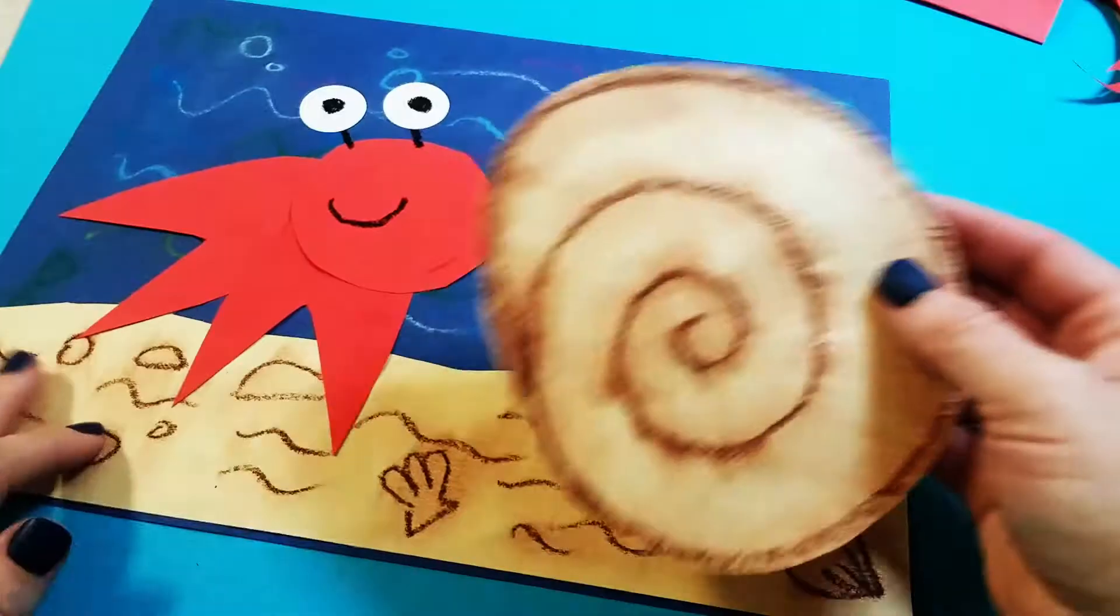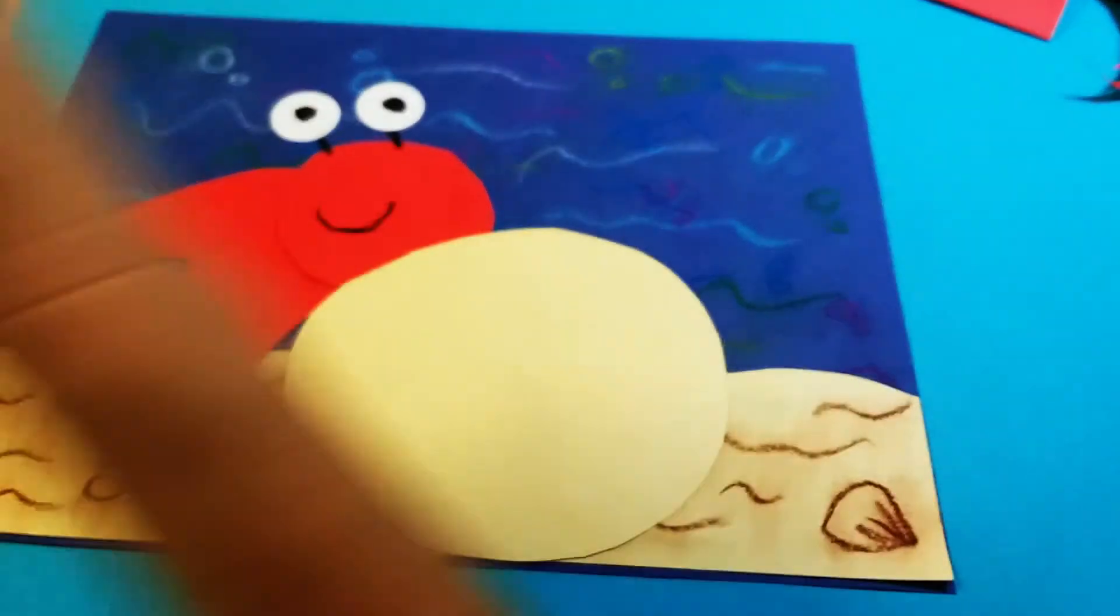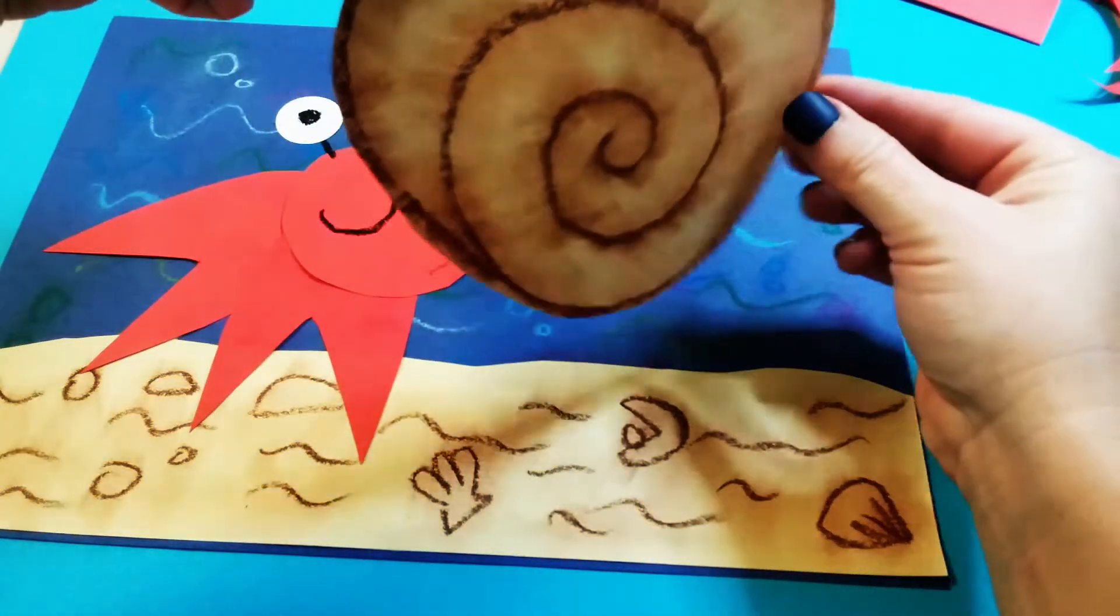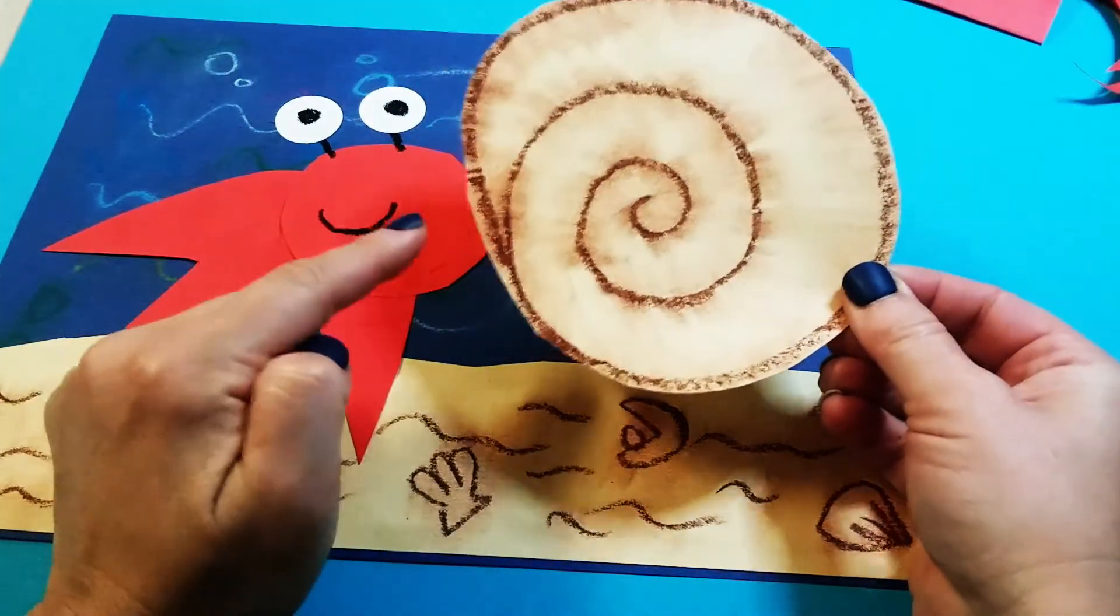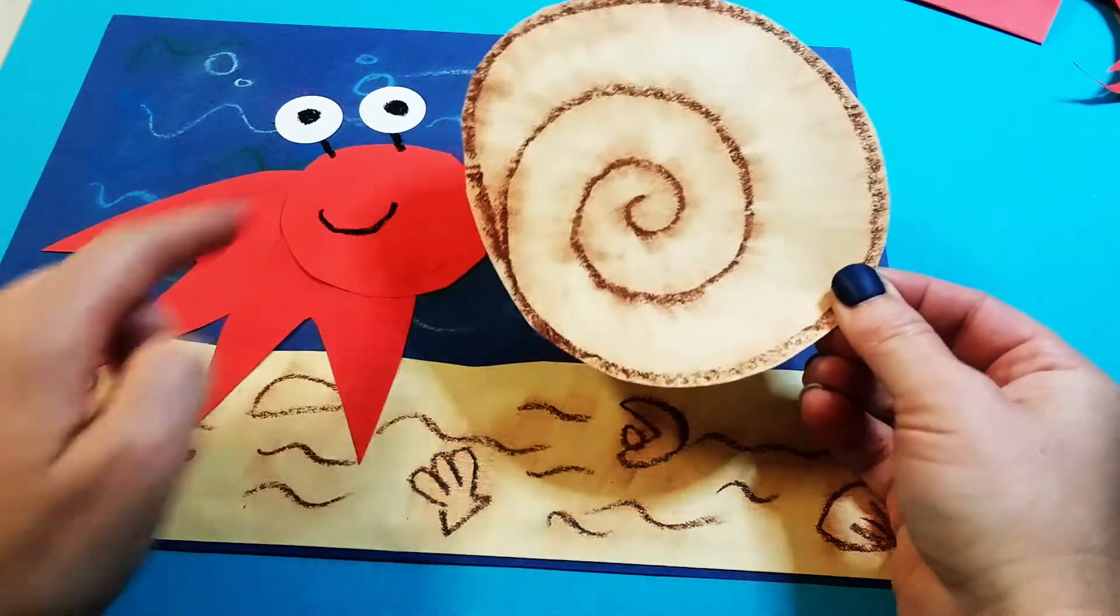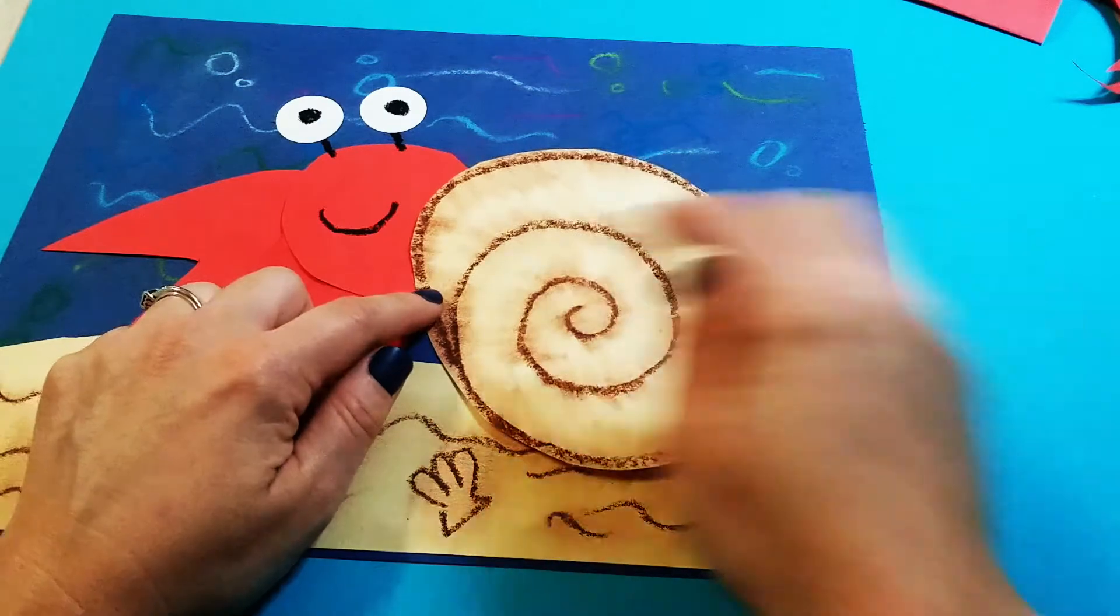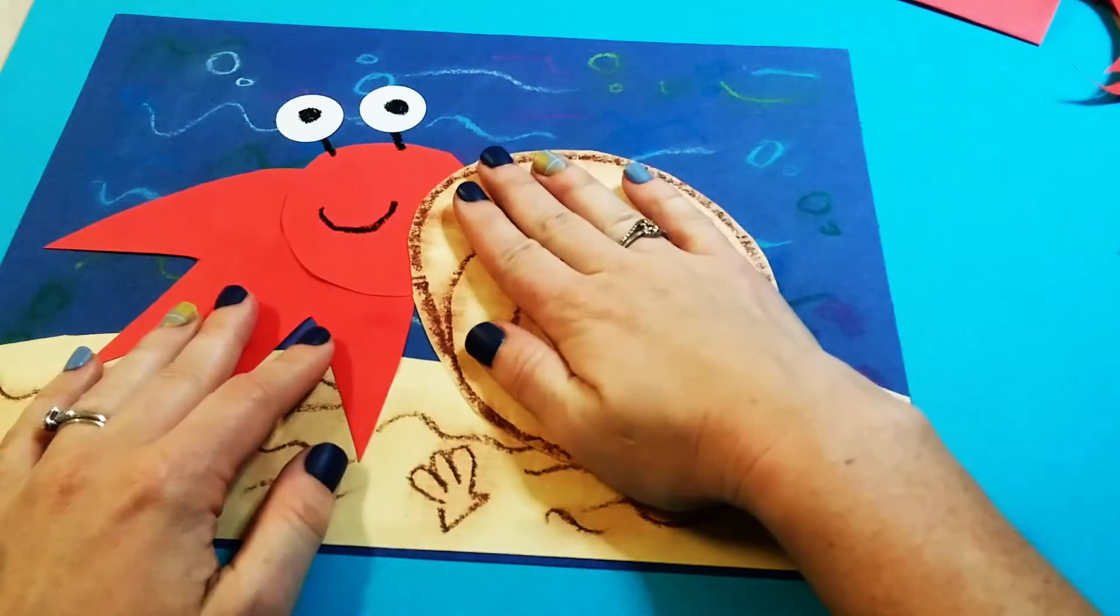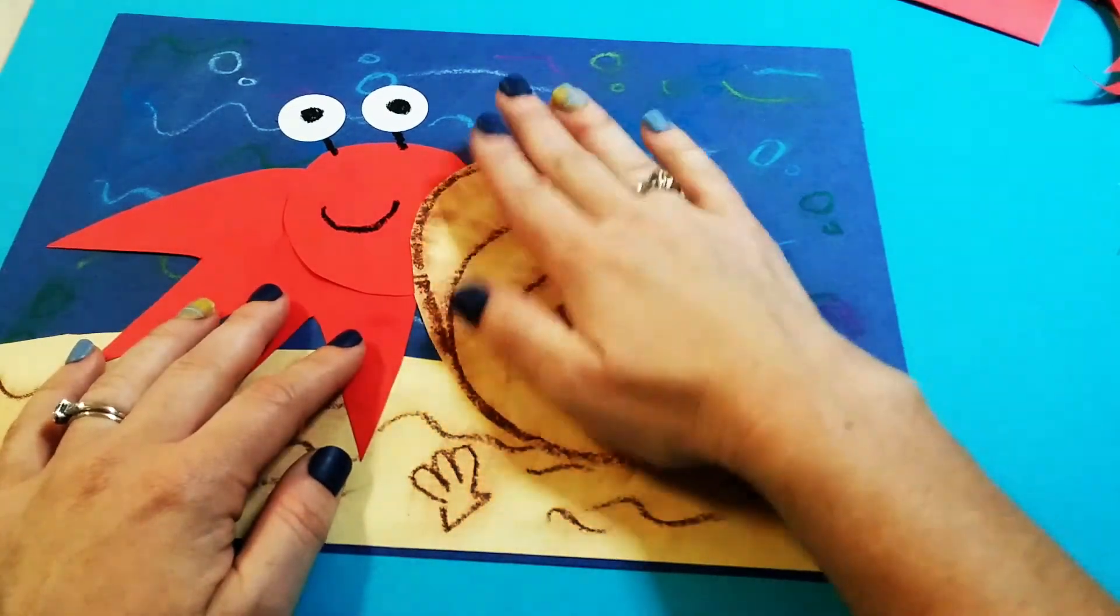All right, so now we have to cut it out. And finally add some glue to the back. We can flip it over and we want to look for the area where the swirl kind of meets right here. And this is where we want to put it towards the head area. So I'm going to turn it so it's sideways so that way it's like he's peeking out of this area right there.